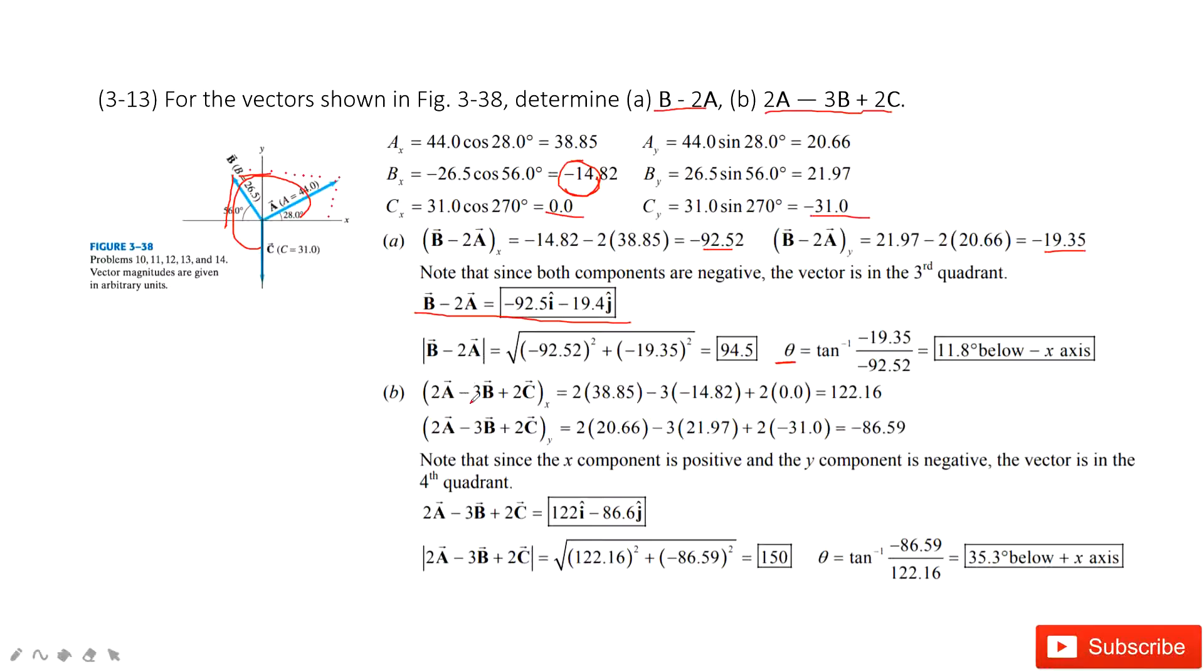Similarly, we can calculate 2a - 3b + 2c. We get the x component by using 2 times ax, subtract 3 times bx, plus 2 times cx.